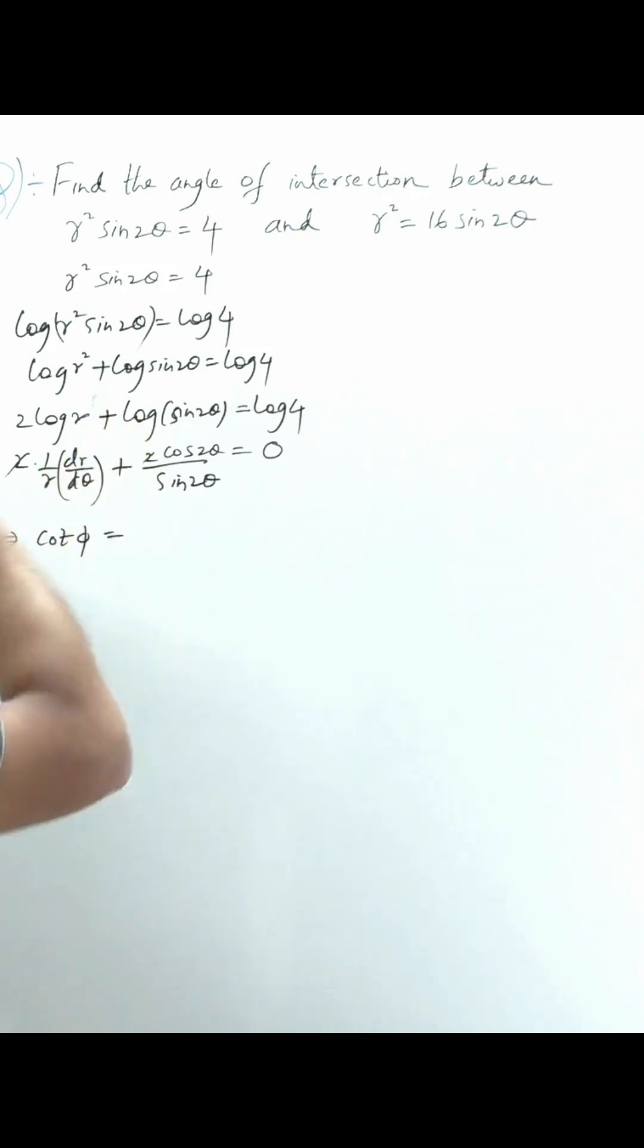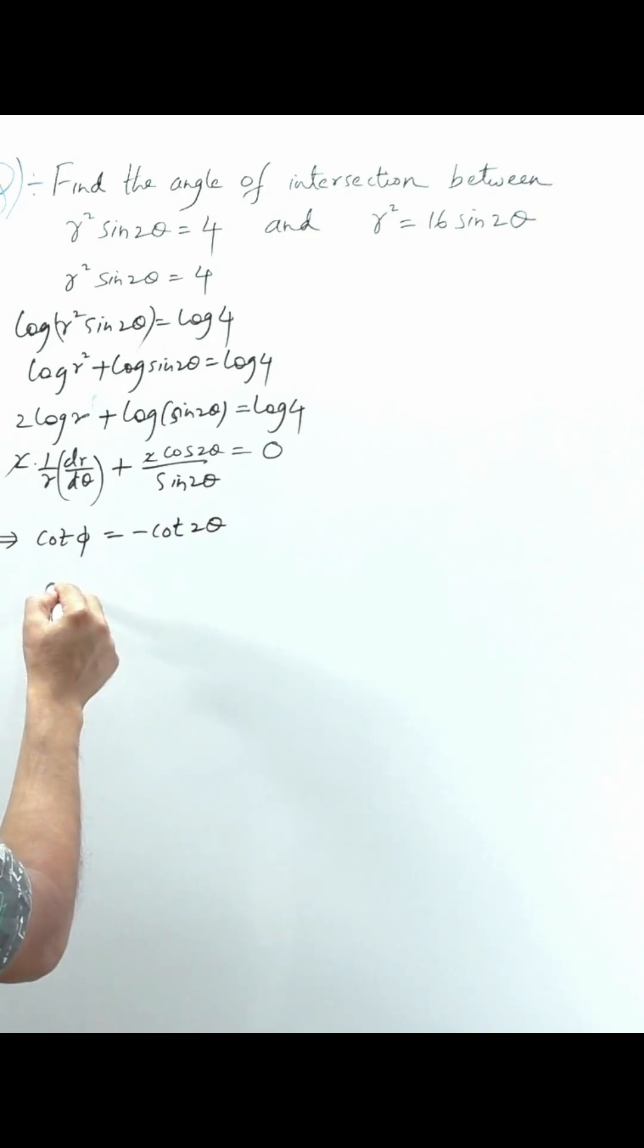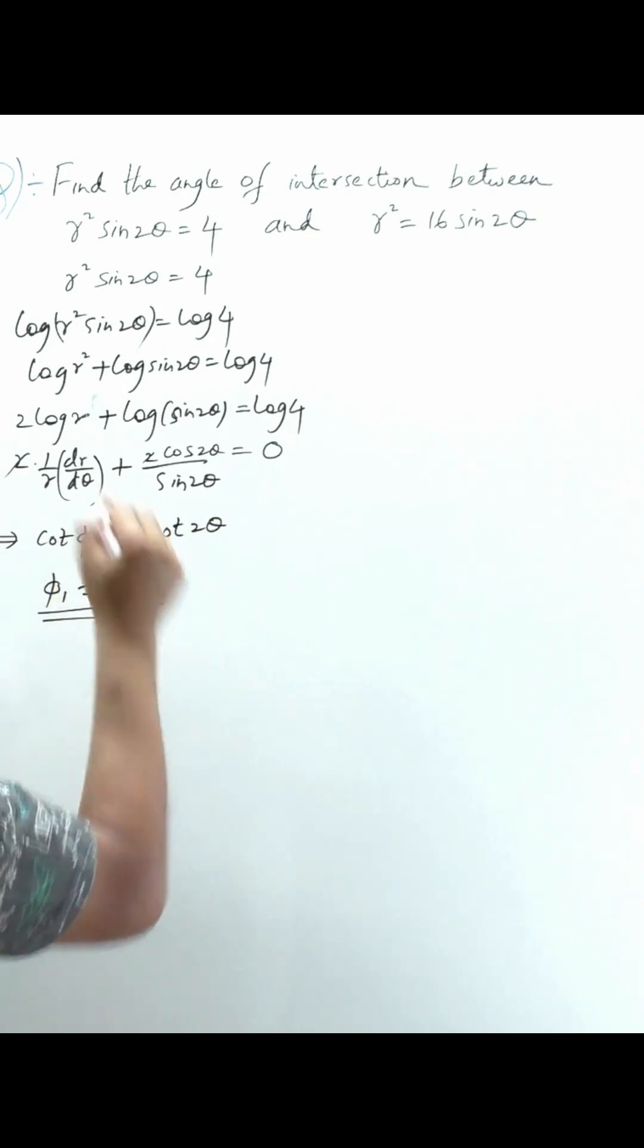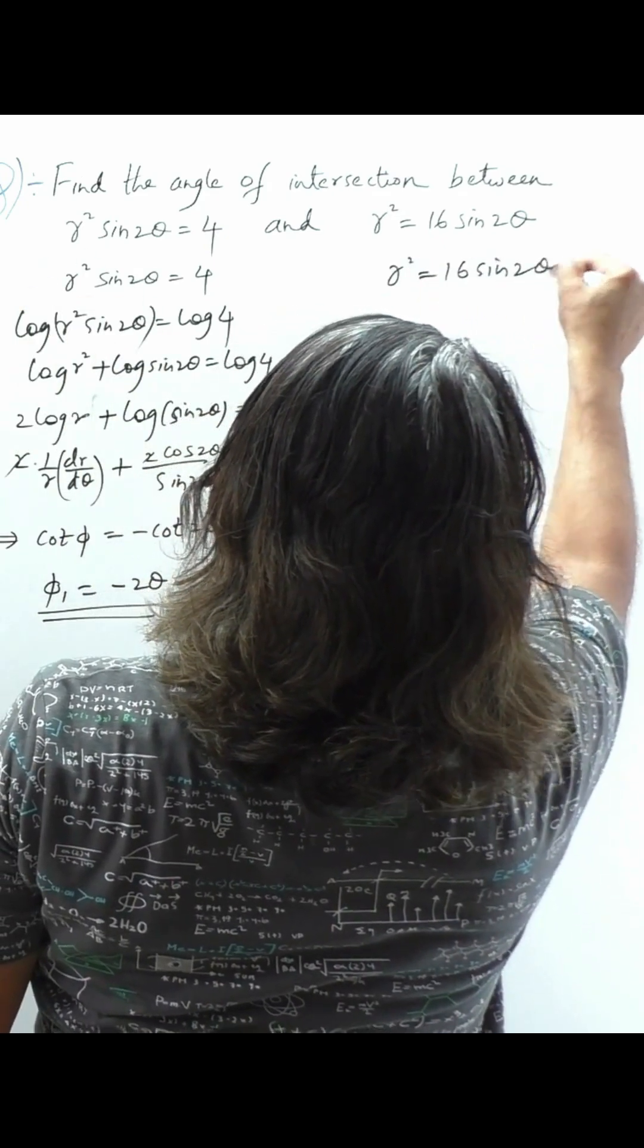Taking this to that side, cot 2θ becomes minus cot 2θ. Therefore the first angle φ₁ is equal to minus 2θ. For the second curve, r² is equal to 16 sin 2θ.